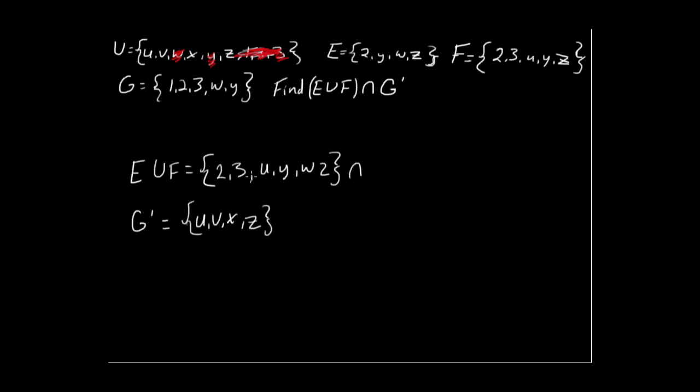Okay, so we want to find the intersection of E union F and G complement. So now over here, now that we've identified G complement, let's just write that in: U, V, X, and Z, that is G complement. Okay, so now an intersection, as I just explained earlier, is everything in one set and also in another. So what common elements do these two sets share?